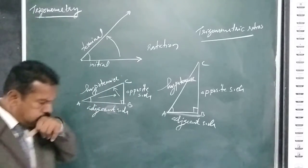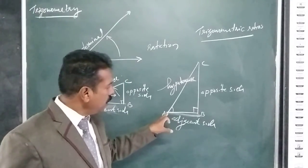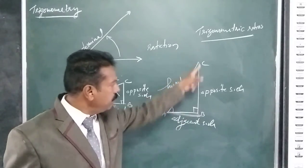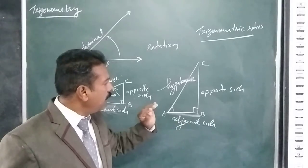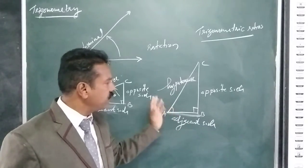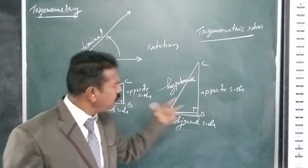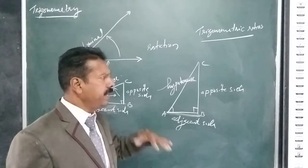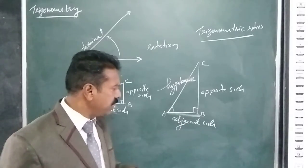This right-angled triangle has three sides: AB, BC, and AC. We can take the ratio of any two sides by dividing one by the other, and you will get the ratio. The ratio of any two sides — for example, opposite side divided by hypotenuse — gives a trigonometric ratio.